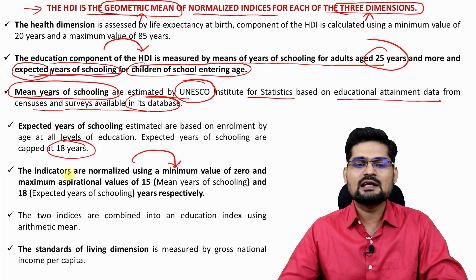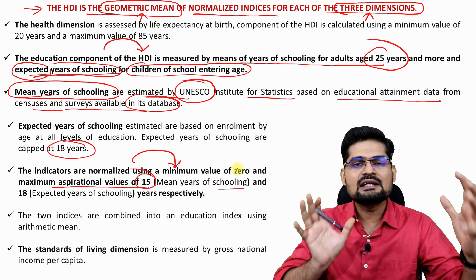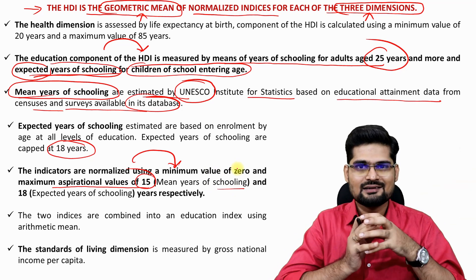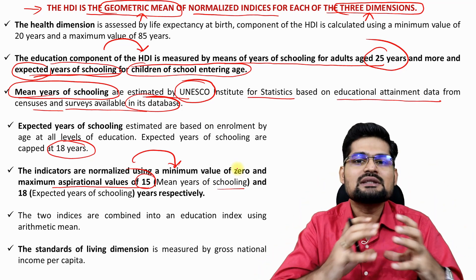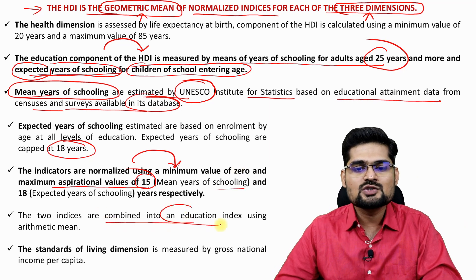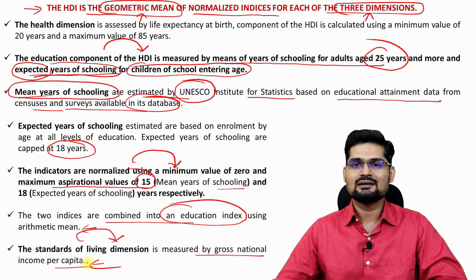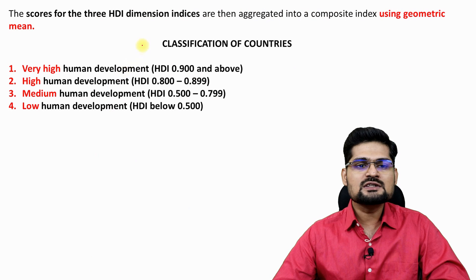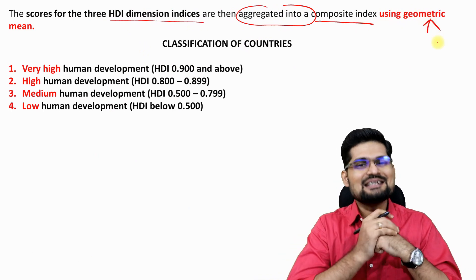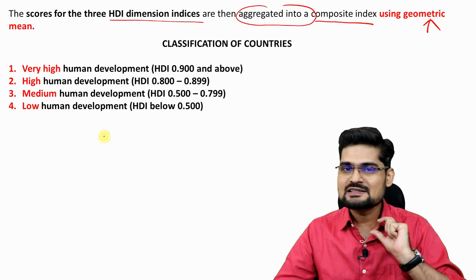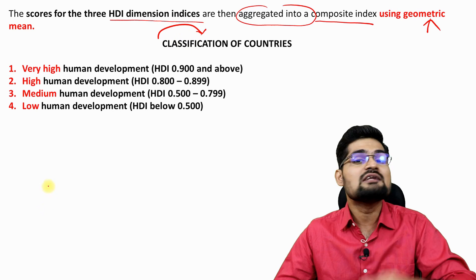Indicators are normalized using a minimum value of 0 and a maximum aspirational value of 15 mean years of schooling. Normalization creates a range and fits the data within it, avoiding extreme values. The two education indices are combined into an education index using arithmetic mean. The standard of living dimension is measured by Gross National Income per capita. The scores for the three HDI dimension indices are then aggregated into a composite index using geometric mean.